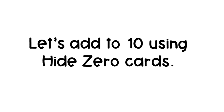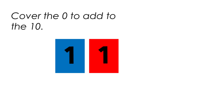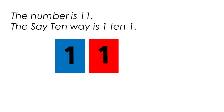Let's add to 10 using the hide zero card. The hide zero card is the red card. We're going to cover the 0 to add to the 10. We've covered the 0 with the hide zero card, which has a 1 on it. Now the number is 11. The say-ten way is 1 ten, 1.